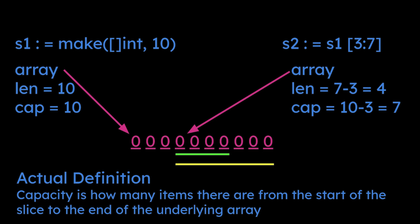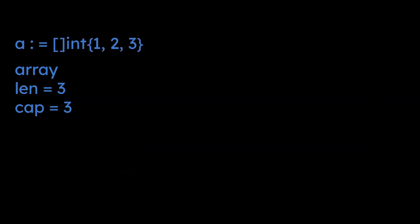We start out with variable A again, which is a slice of integers holding 1, 2, 3. We create this struct which points to this value in memory, the first index of this slice. It's got a length of three, also a capacity of three.